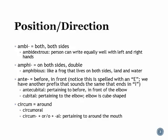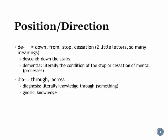Circum means 'around,' so circumoral means pertaining to around the mouth. De has many different meanings — it can mean 'down,' 'from,' 'stop,' or 'cessation.' So two little letters, so many different meanings. Descend — you go down the stairs. Dementia is the cessation of mental processes; it's actually the slowing, but for de, the meaning of cessation or stopping makes the most sense.